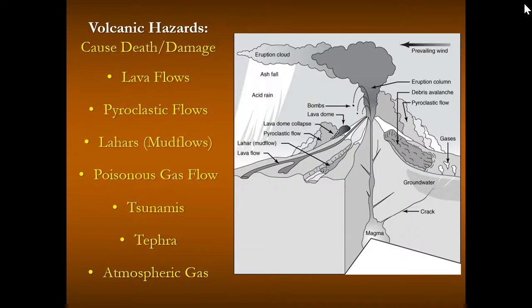Here's a visual showing all the different things that happen during a volcanic eruption and all associated hazards. We can see the pyroclastic cloud, pyroclastic flows, the ash fall producing a muddy rain, an acidic rain, gas release, and so on.